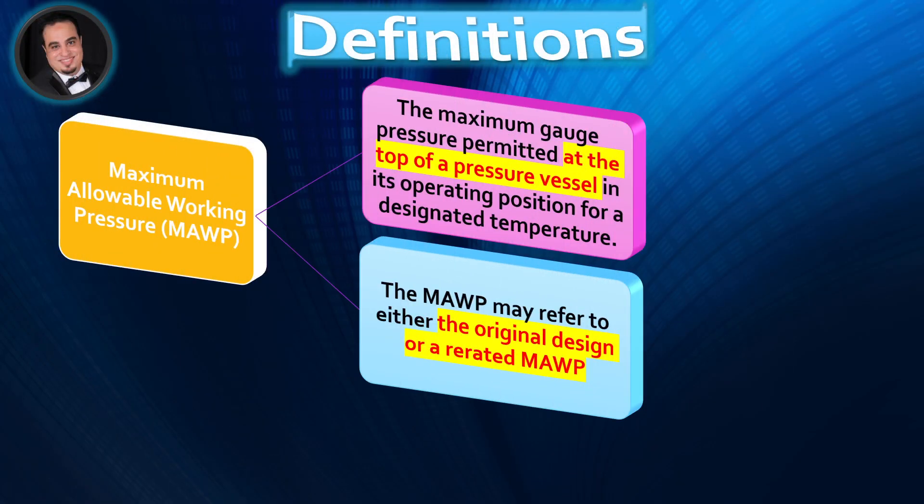Maximum Allowable Working Pressure (MAWP) is the maximum gauge pressure permitted at the top of a pressure vessel in its operating position, for a designated temperature. The MAWP may refer to either the original design or a re-rated MAWP.